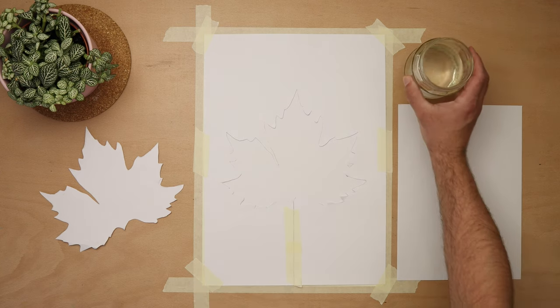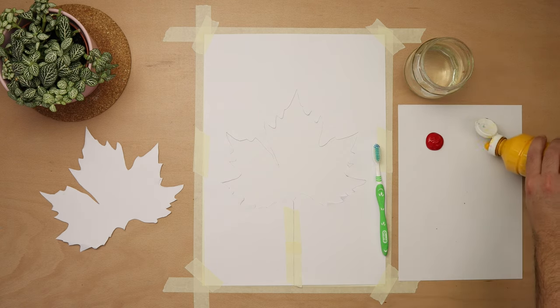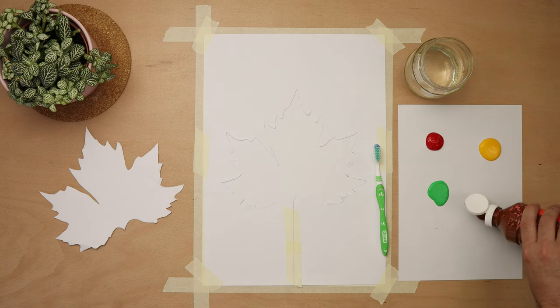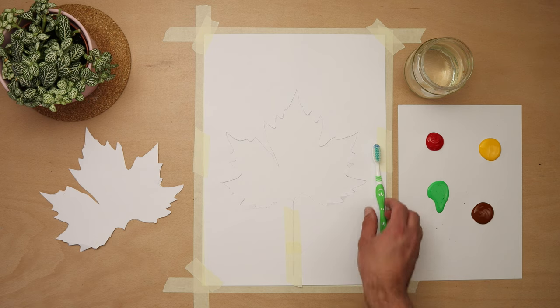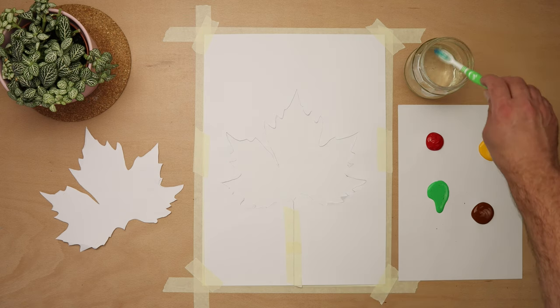Grab your paints, a bit of water and your toothbrush and start to spray the inside leaf shape. Now, you'll probably want to cover your table first but I have an art studio so I don't have to.